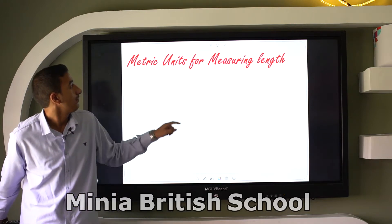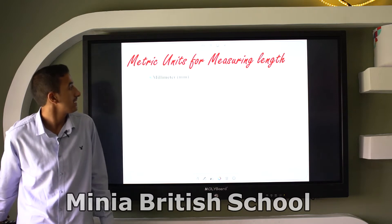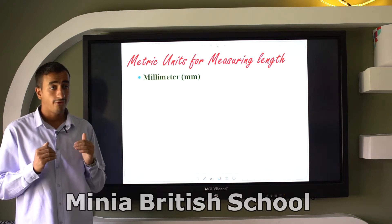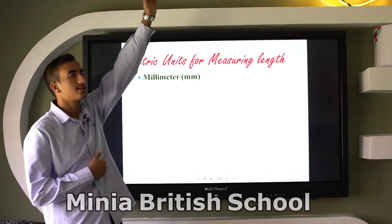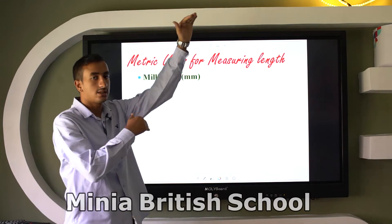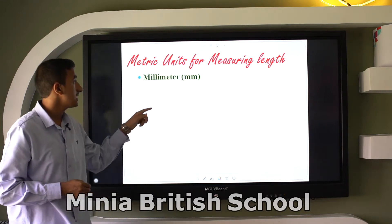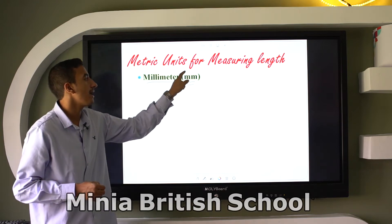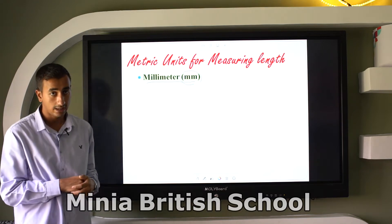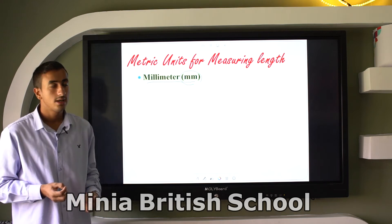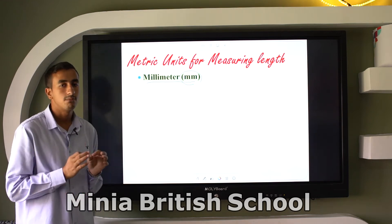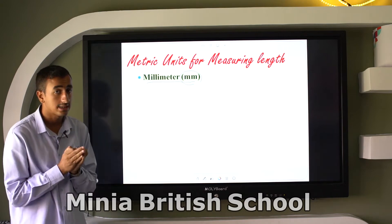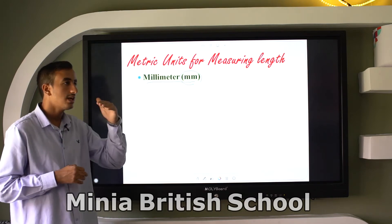The metric units for measuring length, from the smallest to the biggest: the first and smallest unit is millimeter, abbreviated as mm. This is the smallest unit of length.